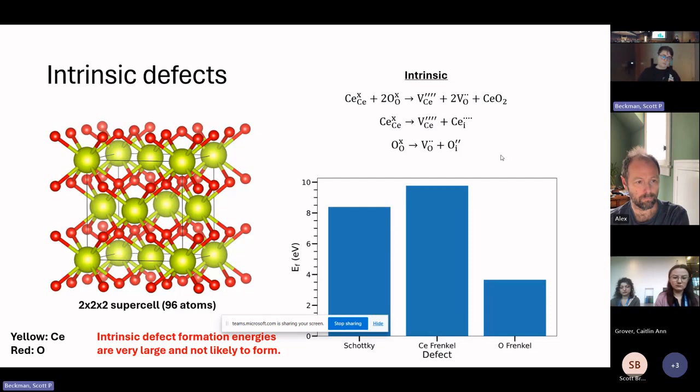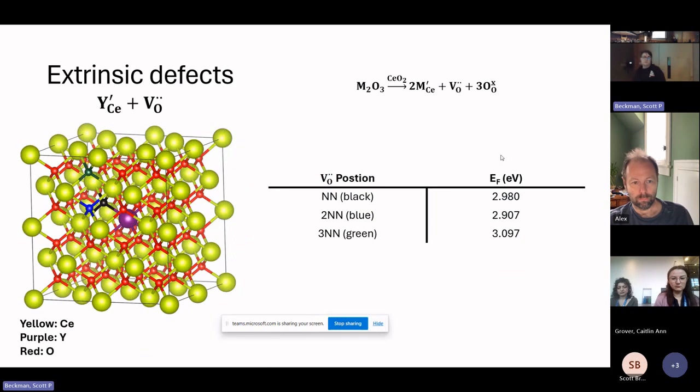These intrinsic defects aren't really what we're interested in. We're interested in the extrinsic defects. To begin the investigation of introducing the yttrium into a ceria cell, we first looked at how the oxygen vacancy would want to bind with the yttrium atom. This isn't using the full Kroger-Vink notation given up here. We aren't maintaining charge neutrality in this case. But to first see how the binding of these two defects would be, I considered looking at an oxygen vacancy that is a nearest neighbor to our yttrium dopant, which is given in black here, a second nearest neighbor given in blue,